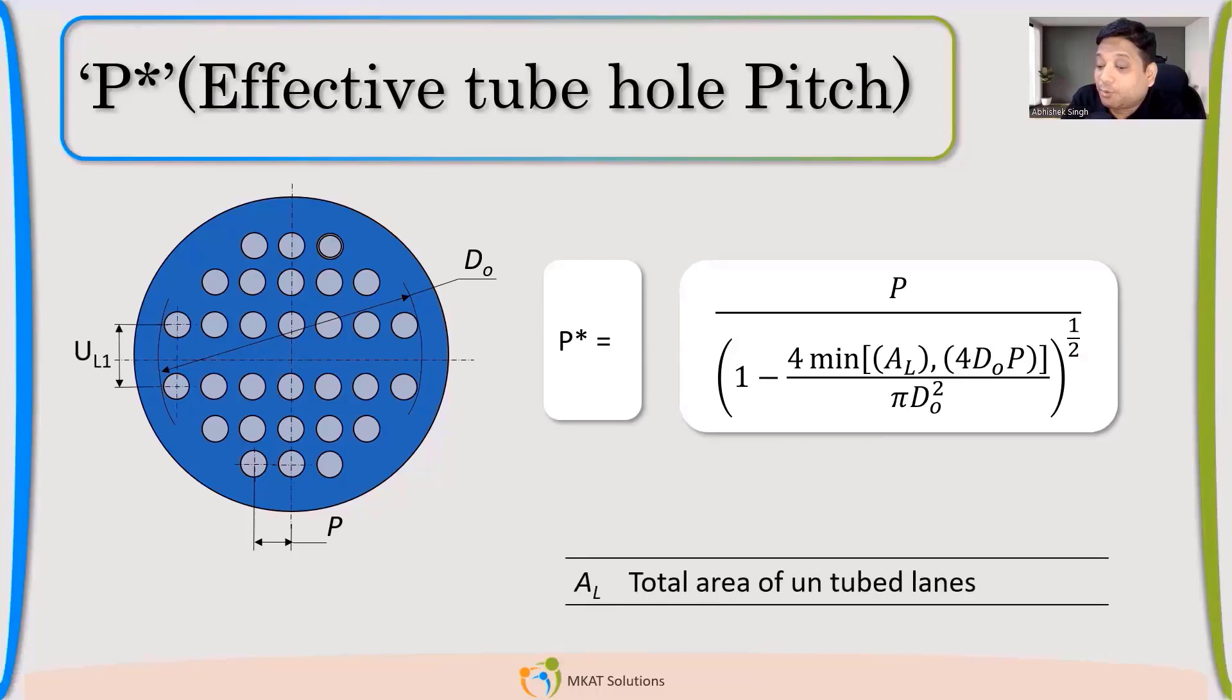So this is the formula for P*. AL is the total area of untubed lanes, and untubed lane is nothing but a lane like this, which you can see. So this is an area where there are no tubes. So basically this is called untubed lane. If your tubes are uniformly distributed, then this AL will not come.